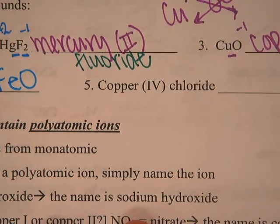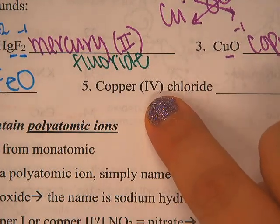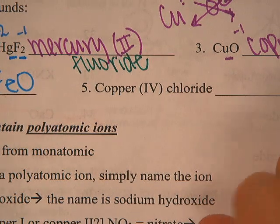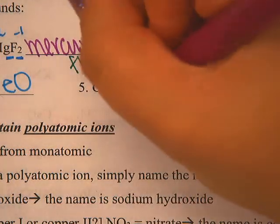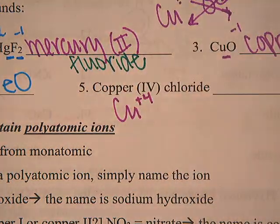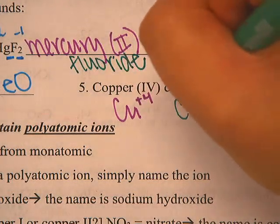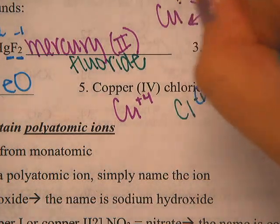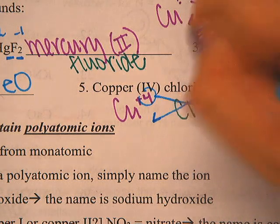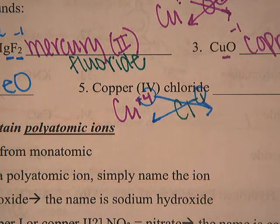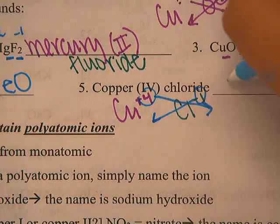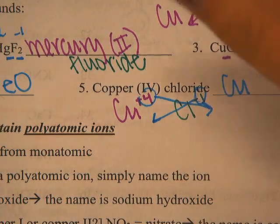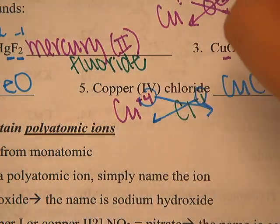The last example is Copper(IV) chloride. That special Roman numeral represents 4, so copper is Cu with a plus 4 charge, and chloride is Cl with a minus 1 charge. The 1 crisscrosses down and the 4 crisscrosses down. My formula becomes CuCl₄ — the subscript on Cu would be 1, but since 1 is implied, we do not write it.